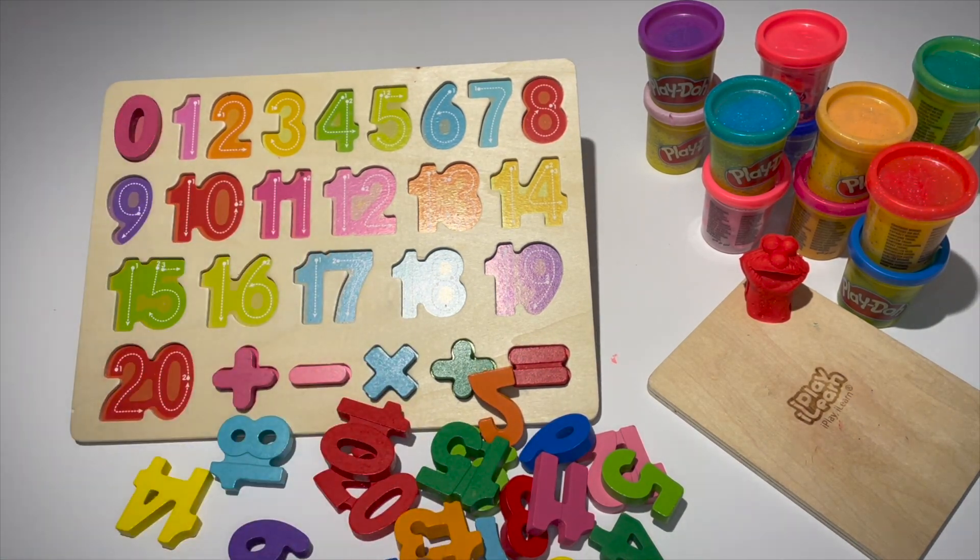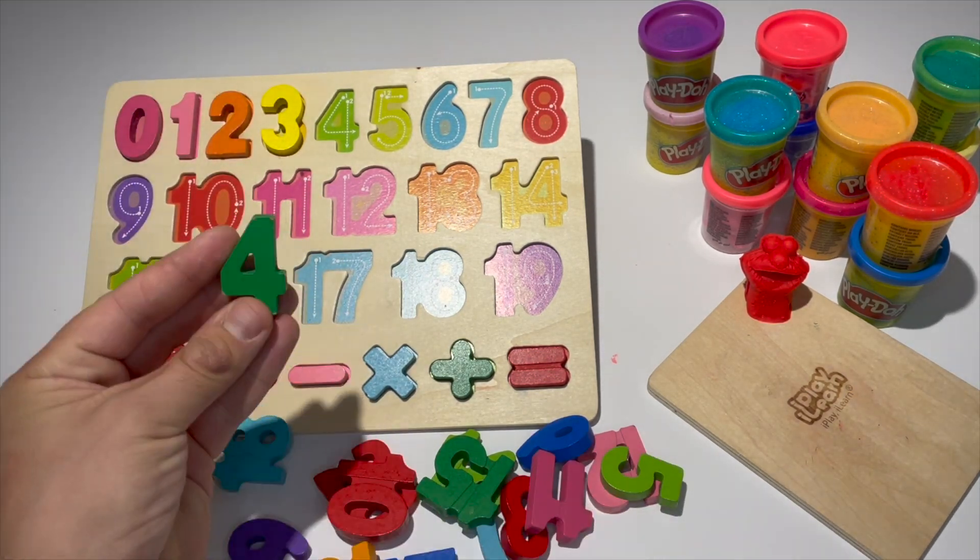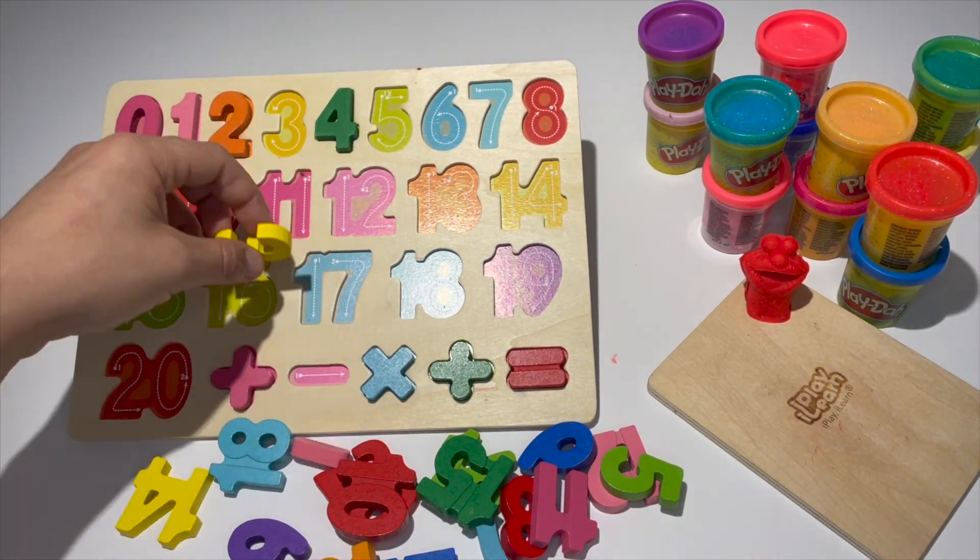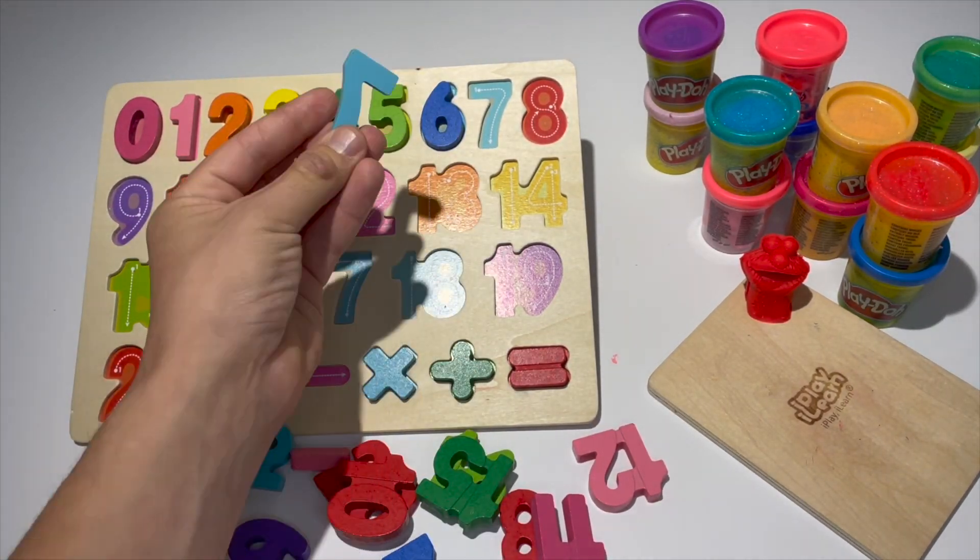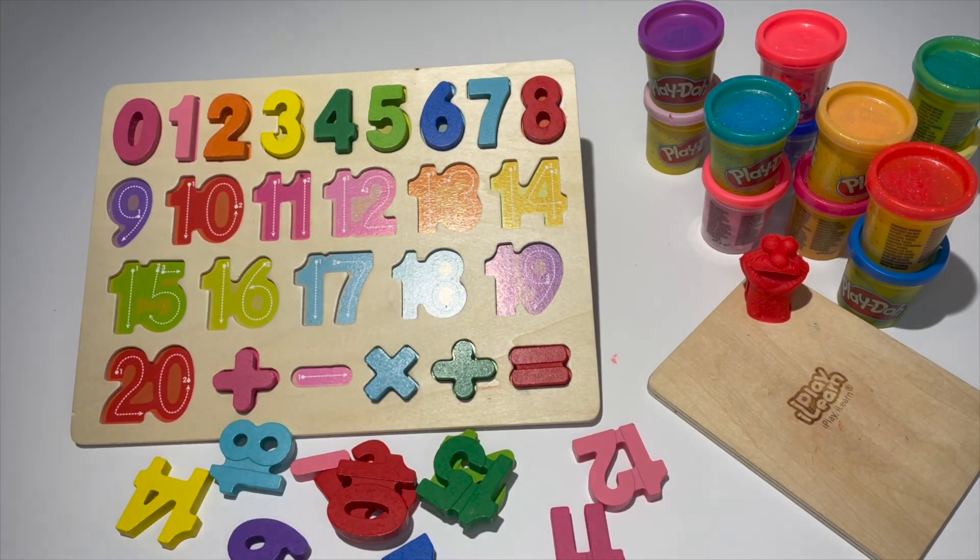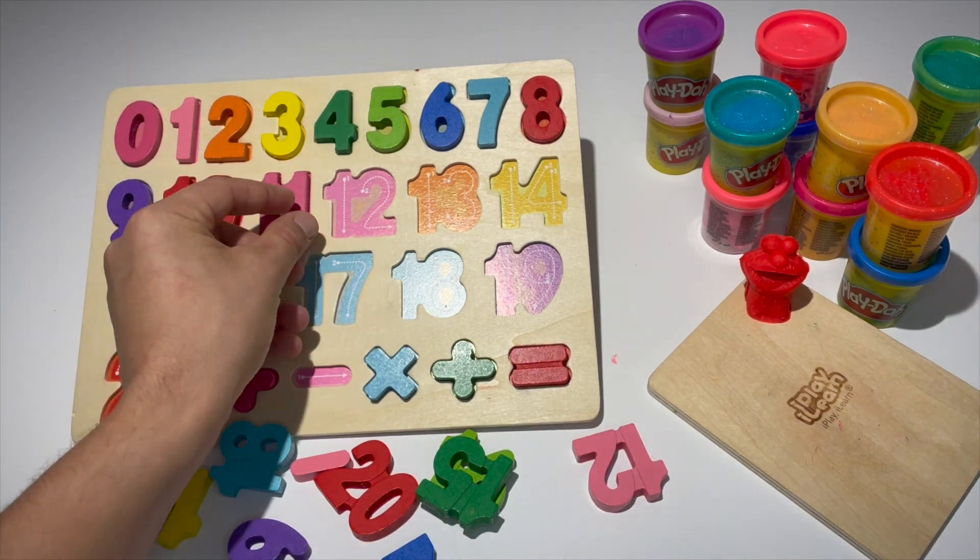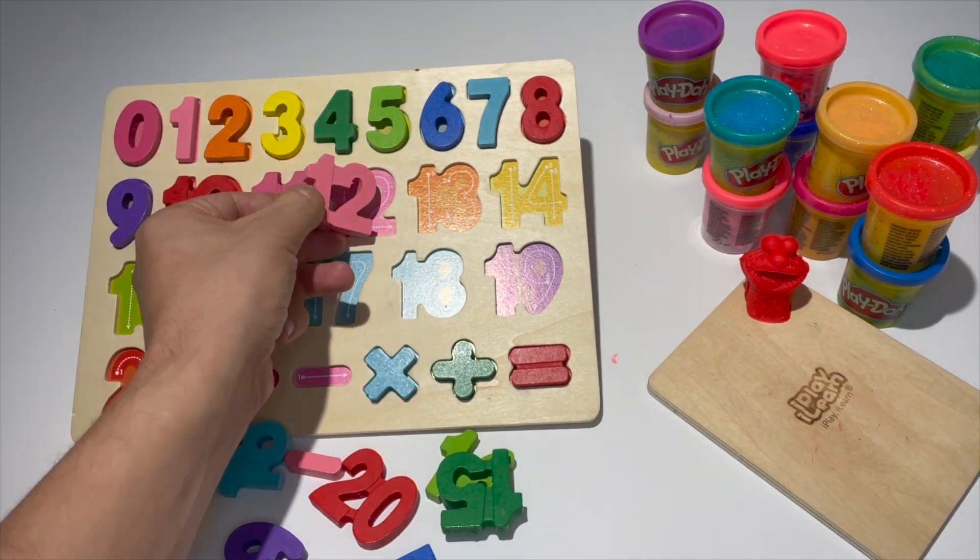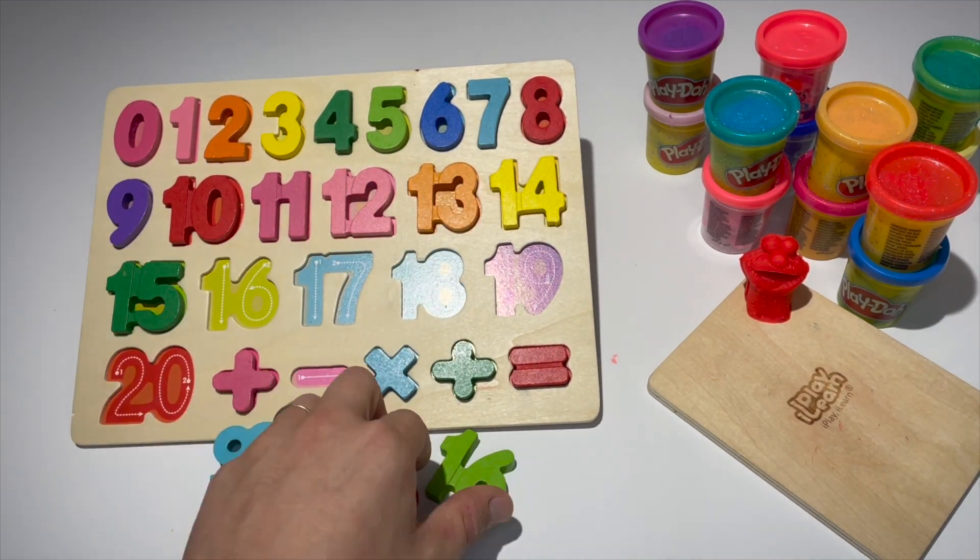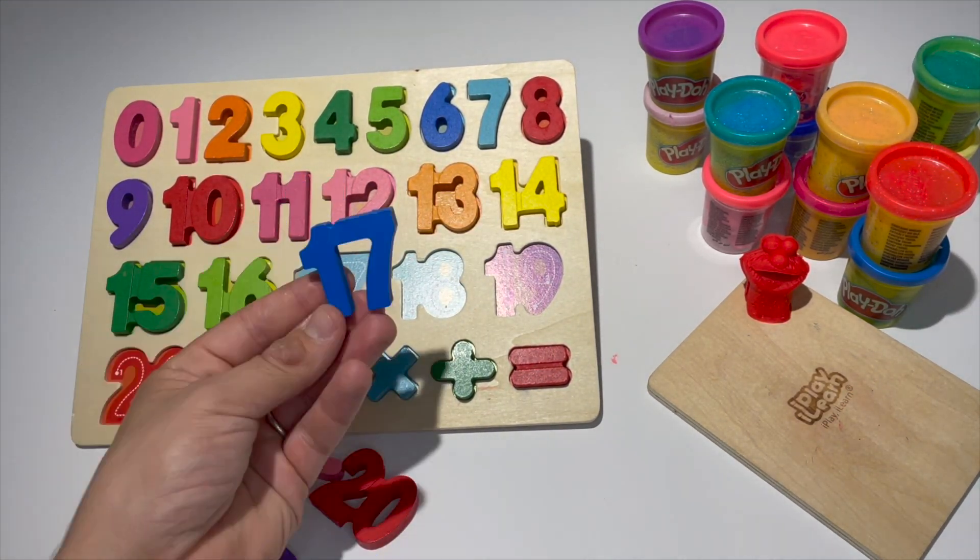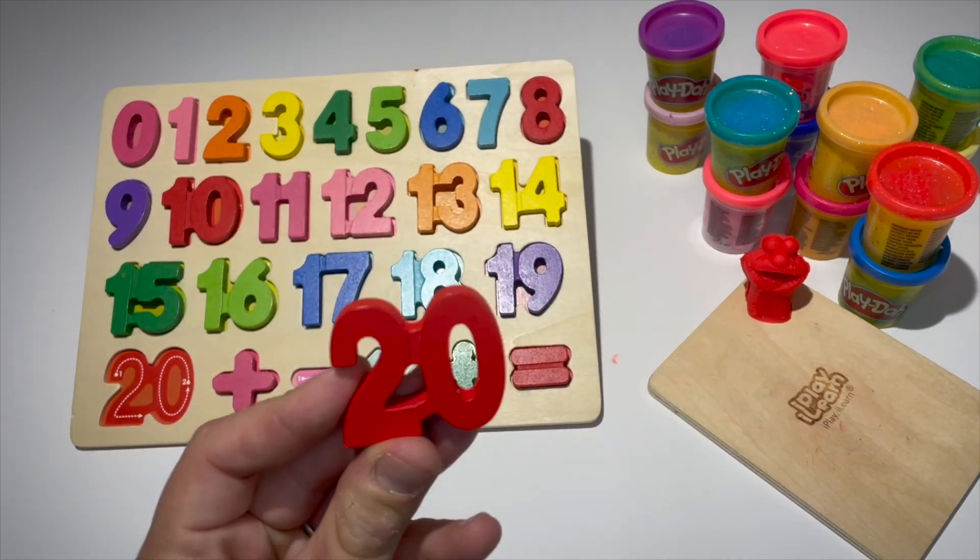Okay, let's recap. Zero, one, two, three, four, five, six, seven, eight, nine, ten, eleven, twelve, thirteen, fourteen, fifteen, sixteen, seventeen, eighteen, nineteen, and twenty.